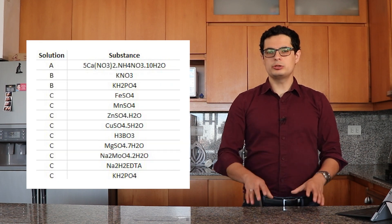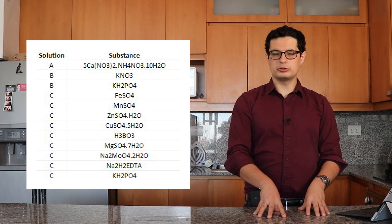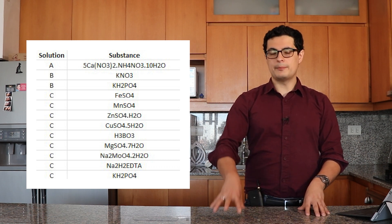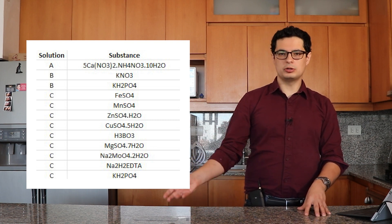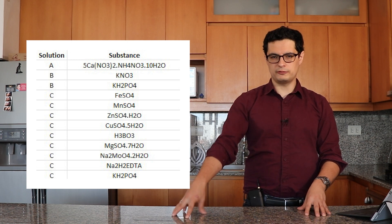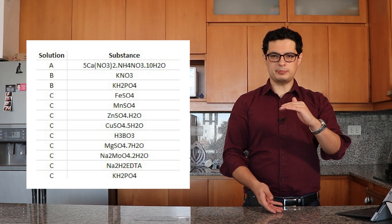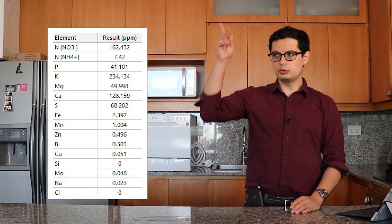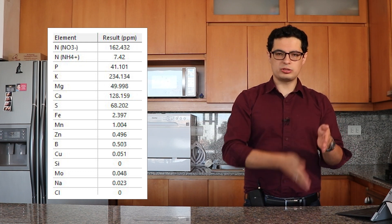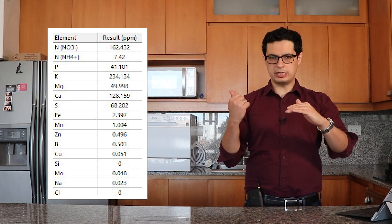This nutrient solution is made using three different stock solutions. We have an A solution that contains only calcium nitrate, a B solution that contains potassium nitrate and monopotassium phosphate, and a C solution that contains all the micronutrients and magnesium sulfate. When you first prepare your Kratky setup, you fill it up with all three solutions to achieve the initial targets shown here using the A, B, and C configuration.